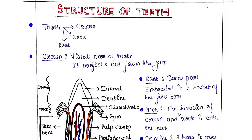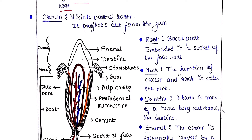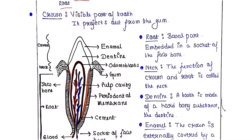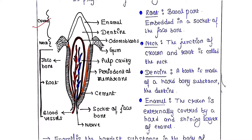Today we will talk about the structure of human teeth. The tooth contains three main parts: first is the crown, then the neck, and then the root. The anterior portion of the tooth is the crown, the posterior part is the root, and in between the root and crown we have the neck.